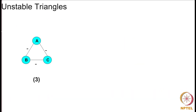Now let's look at the unstable triangles. The first unstable triangle has all negative edges — all nodes are enemies of each other. This situation cannot stay for a long time given the belief that 'enemy of my enemy is my friend,' which leads some nodes to befriend others, changing the configuration and moving towards a stable state.